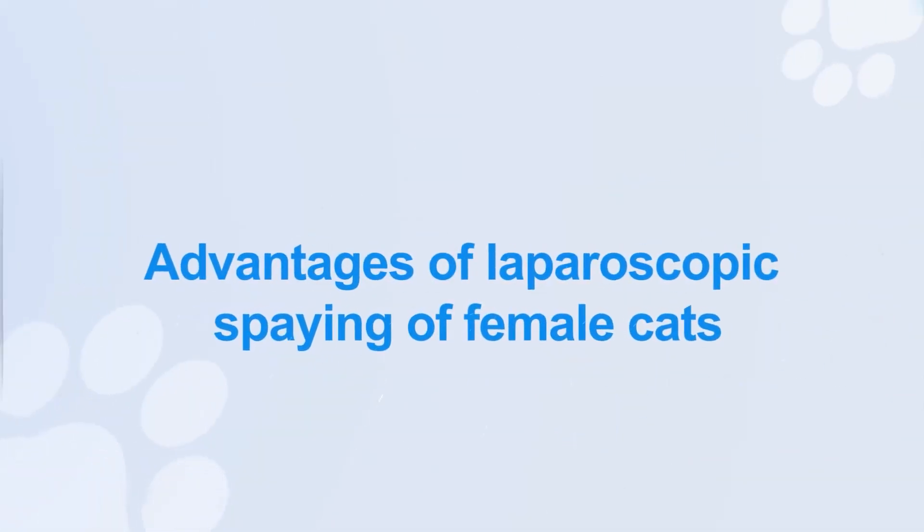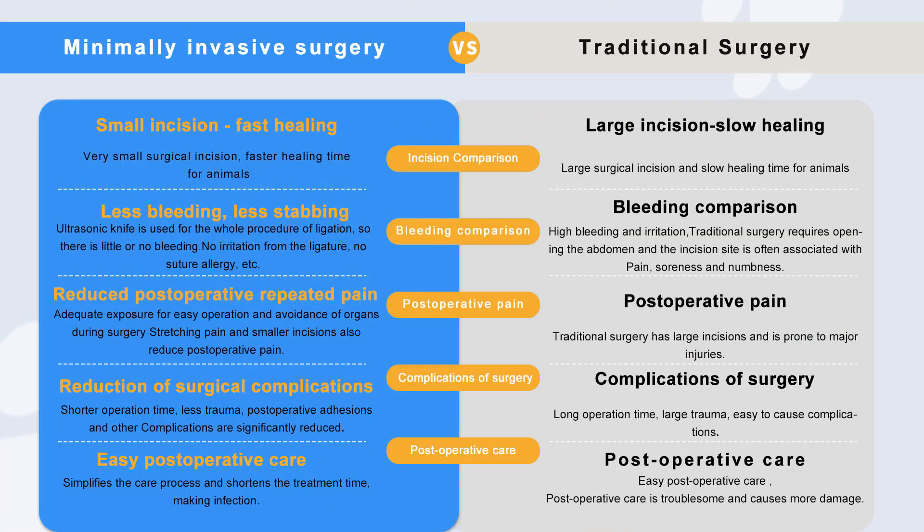Advantages of laparoscopic spaying of female cats compared to traditional open sterilization. Small incision and fast healing: the surgical incision is extremely small and the animal healing time is accelerated. Less bleeding and less irritation: the ultrasonic knife is used throughout, resulting in very little or no bleeding and no ligature irritation, suture allergy, or similar problems. Reducing postoperative pain: adequate exposure and easy operation avoid organ-pulling pain during surgery, and smaller incisions also reduce postoperative pain.